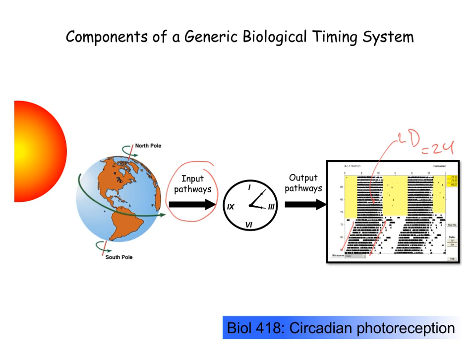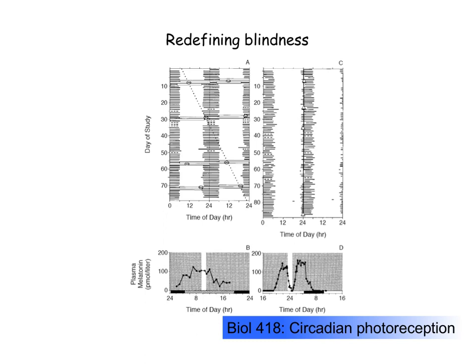In mammals, all the information that gets to the master circadian clock in the suprachiasmatic nucleus, and in fact into the brain in general, comes through the eyes. This is not the case for other vertebrates, and we'll talk more about this in coming lectures. But the point is, in mammals, you can assume that all the photoreceptive information that gets to the brain has to go through the eyes.